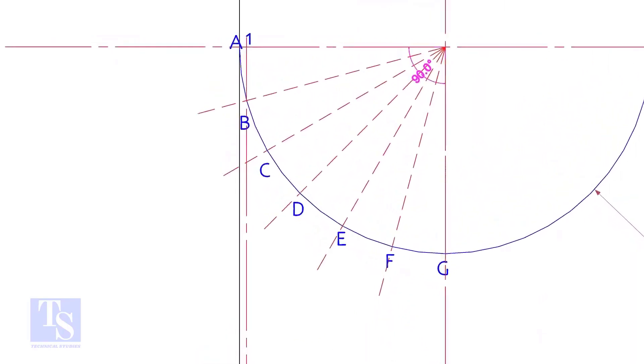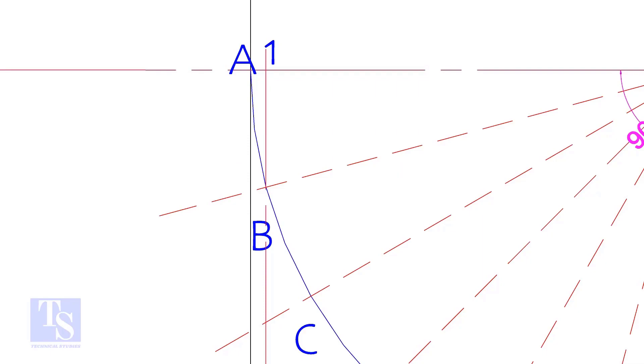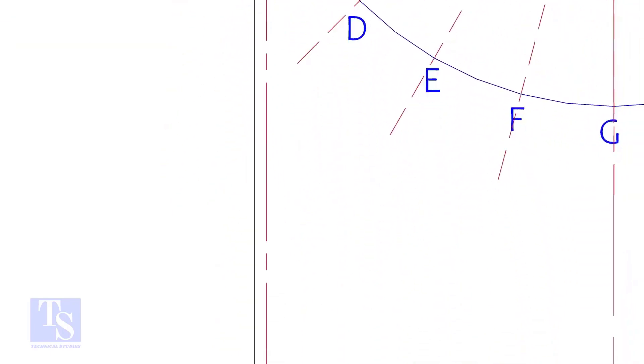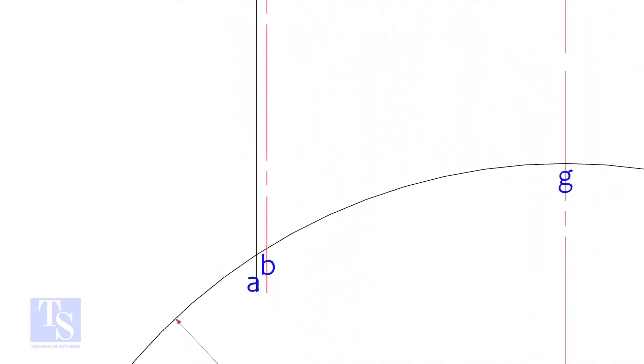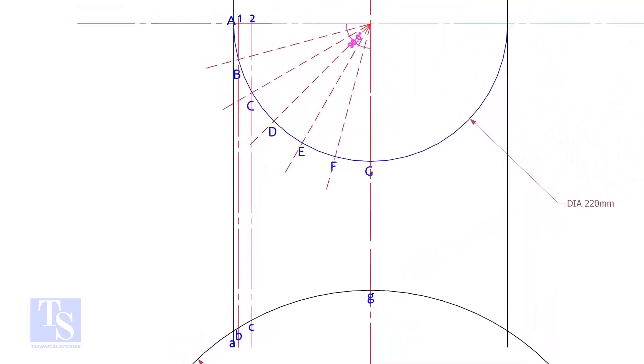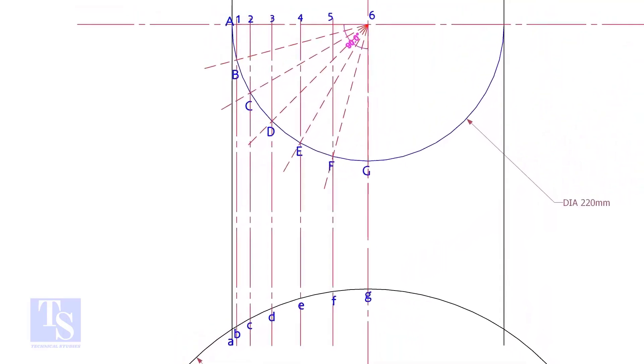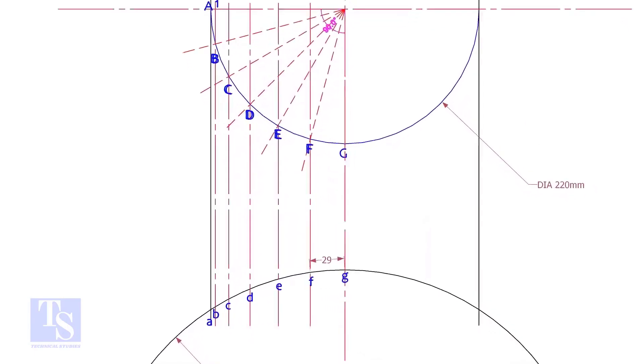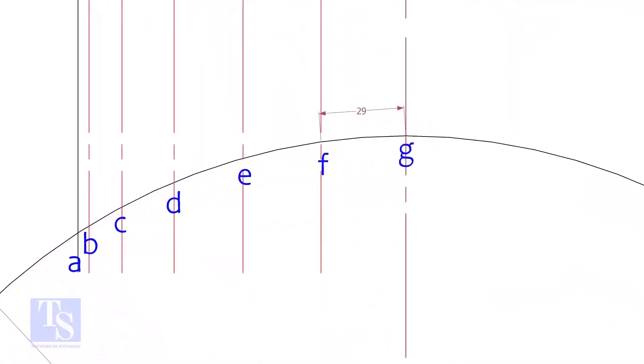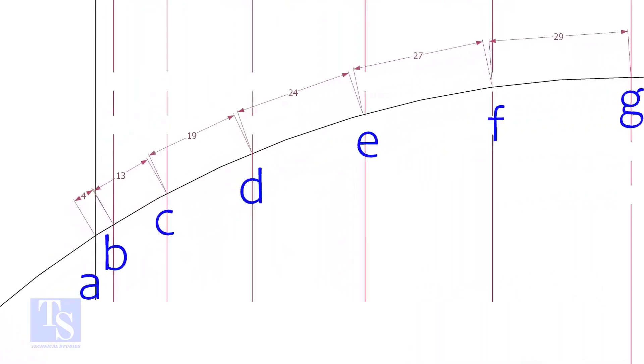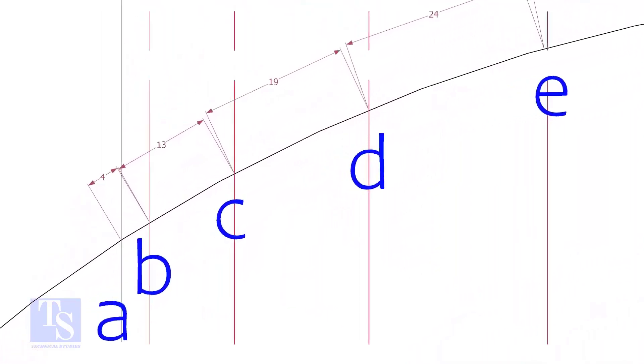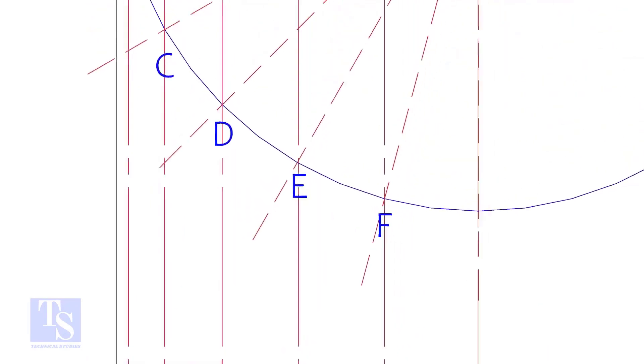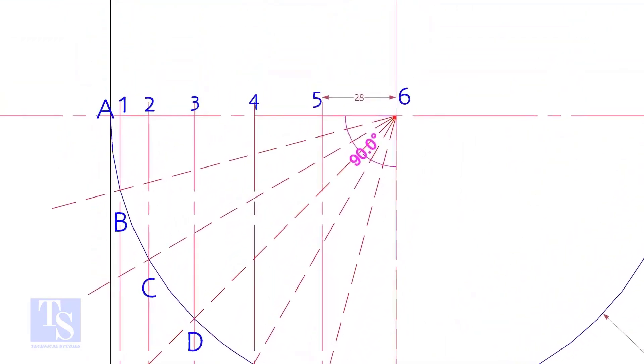Draw perpendicular lines BB, CC, etc. Measure and note down the arc lengths GF, FE, etc. Don't measure the chord length. Hope you all know the difference between the arc length and the chord length. Go to the top and measure and note down these measurements.